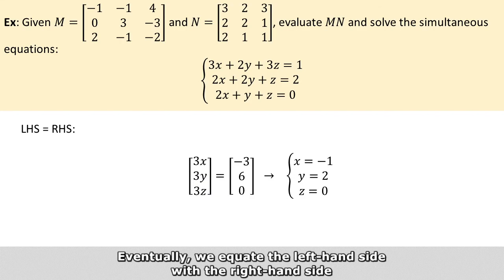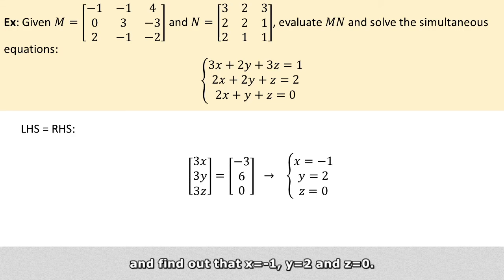Eventually we just have to equate the left-hand side with the right-hand side, and we will find out that x equals -1, y equals 2, and z equals 0.